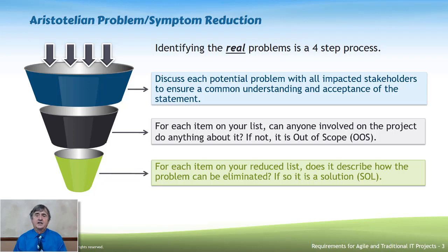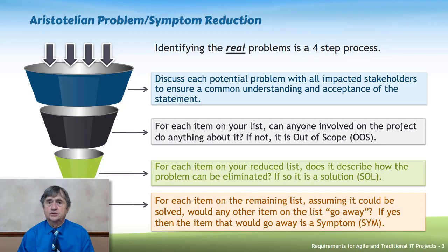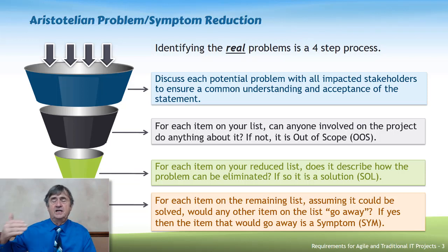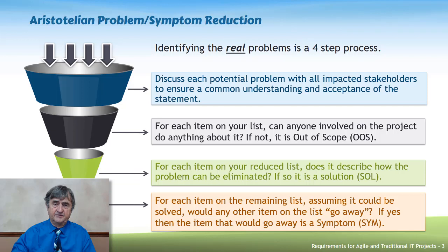Applying Aristotelian problem symptom reduction reduces your list to things that are in scope and closer to real problems rather than solutions. The final step is ferreting out symptoms from problems: go through your list and ask, if this is the real problem and you could solve it, would any other item on the list go away? If something disappears as a result of solving one problem, it's a symptom of that problem. For example, if solving problem five makes problem six disappear, then six is a symptom of five.